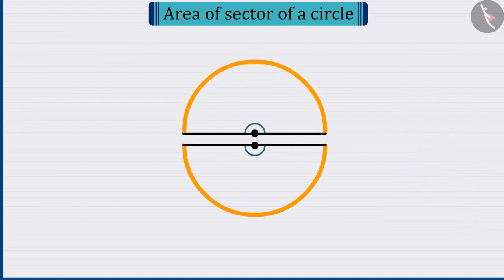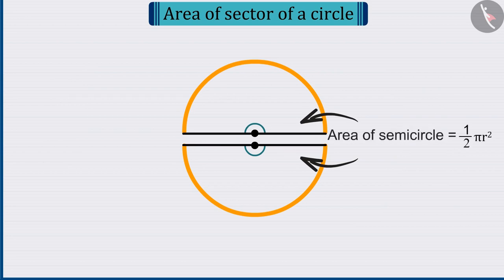If the circle is divided into two, then it becomes what is called a semi-circle. Each of whose area can be found with the help of one by two pi r square.